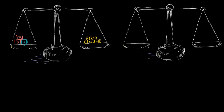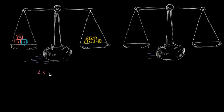Let's think about the total mass on the left side. We have two masses of mass x, so those two total 2x. And then we have a mass of y. So the total mass on the left-hand side is 2x plus y. The total mass on the right-hand side is just 8 — counting 1, 2, 3, 4, 5, 6, 7, 8. It is equal to 8.